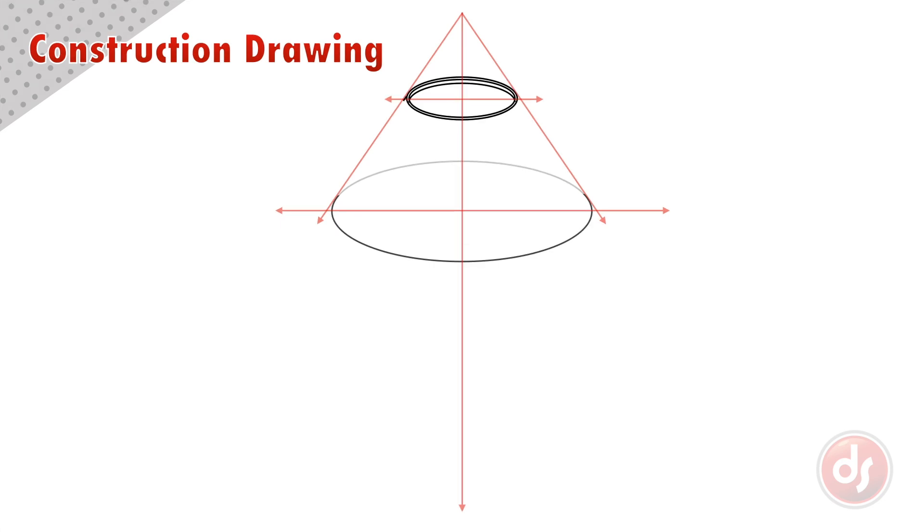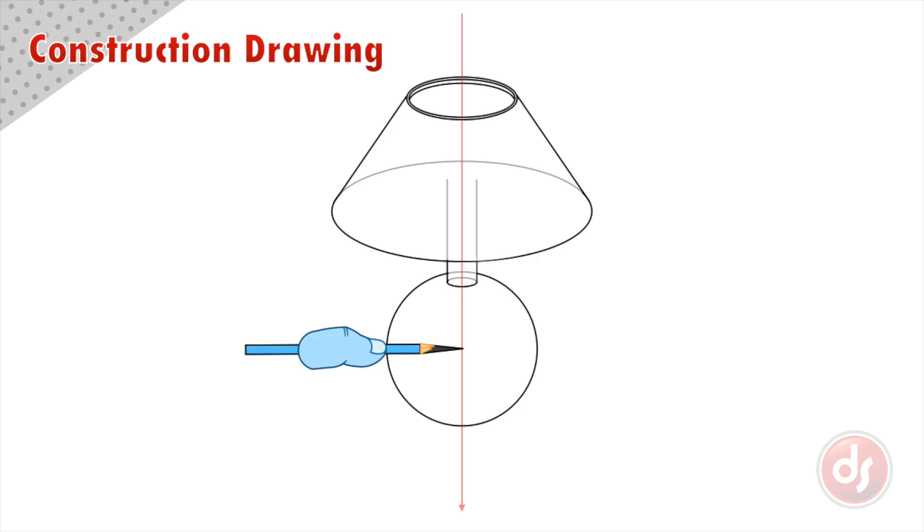On either side of the center line we will draw lines down to construct a cylinder for the neck of the lamp. Next I will draw a sphere for the body of the lamp. I can use my pencil and finger to measure the space on one side of the center line and compare that to the other side to make sure the lamp is symmetrical. We can always use the center line and this sighting trick to check the symmetry of our objects.